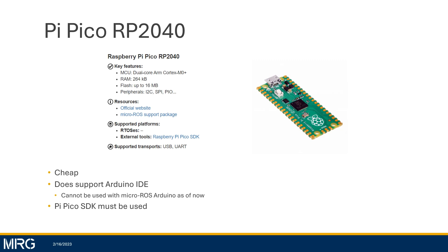I did pull these straight from their website. The first example I'm going to go over is the Pi Pico, which is created by the Raspberry Pi company. This one is probably one of the cheapest options, around five dollars last time I checked. It does support the Arduino IDE, but it does not support Micro-ROS Arduino as of today. So if you want to use this microcontroller with Micro-ROS, you're going to have to use the Pi Pico SDK, which resembles more of your traditional microcontroller programming experience where you compile your code and then drag and drop it over into your device.